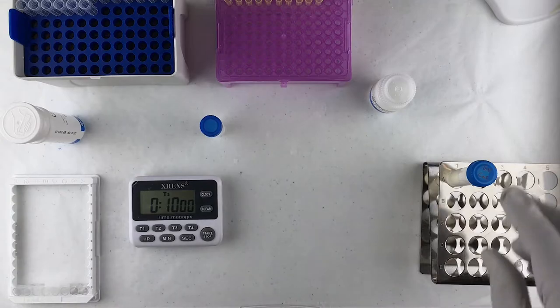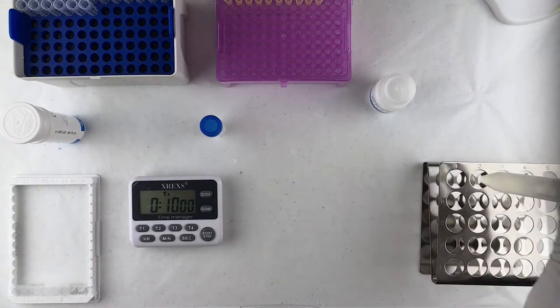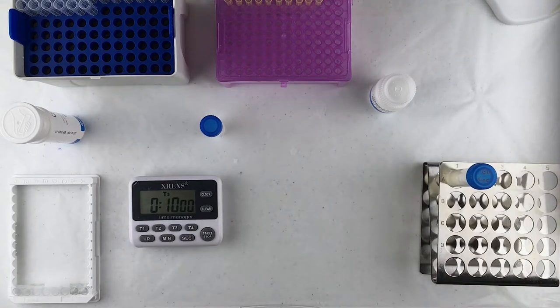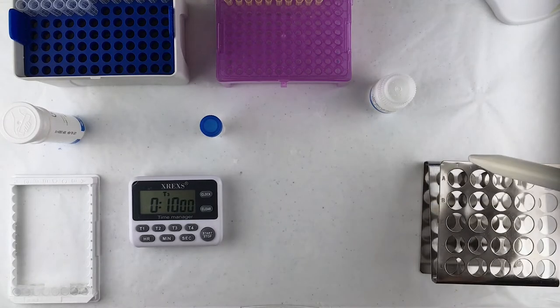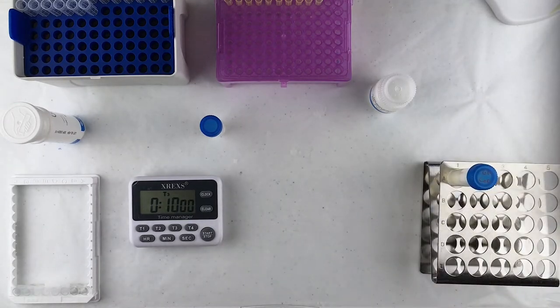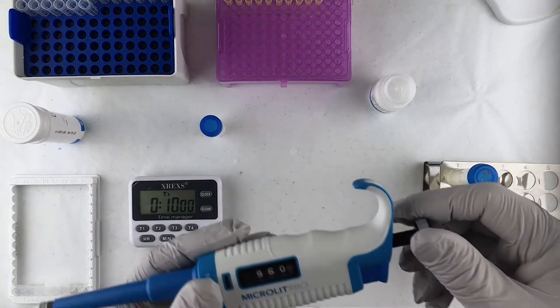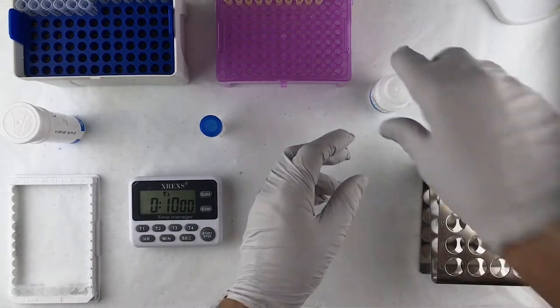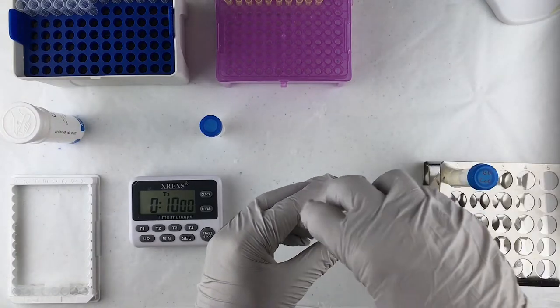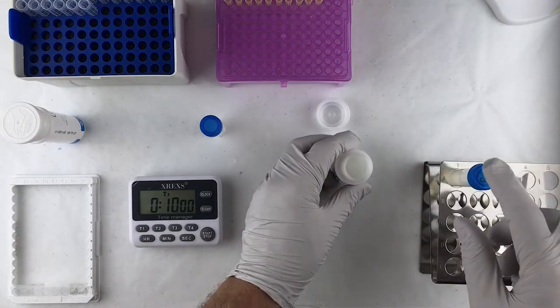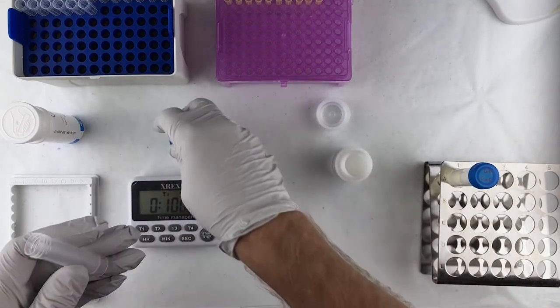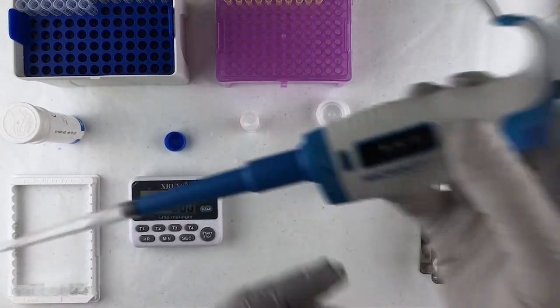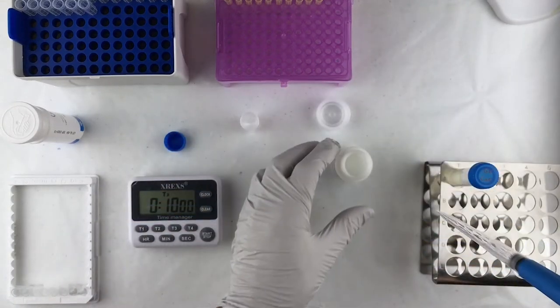Now we're going to be analyzing this at a limit of detection of three parts per million. Now what that means is for three parts per million we've got to use one to 25 extracted food sample to dilution solution ratio. So we're going to start with the dilution solution and basically we're going to take 960 microliters of the dilution solution and mix it with 40 microliters of the extracted food sample. We're going to do it in this empty vial right here. So I've got my pipette set to 960 microliters.